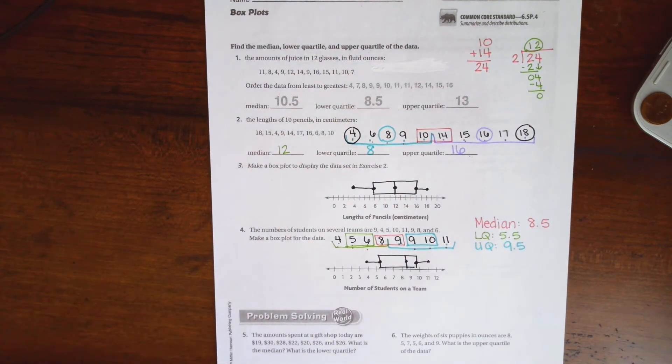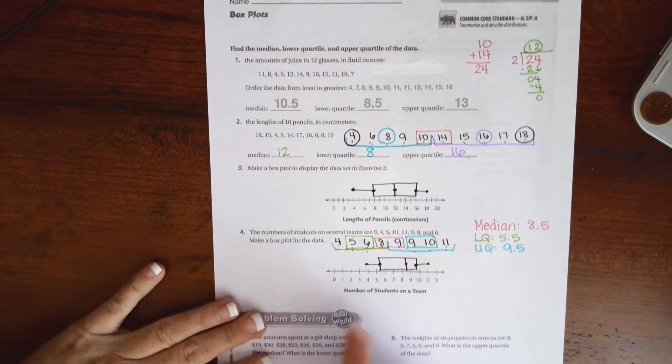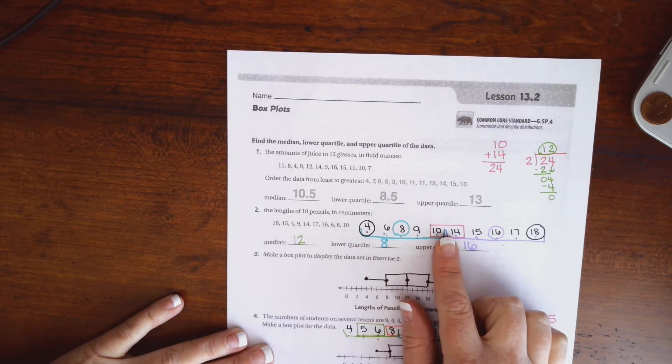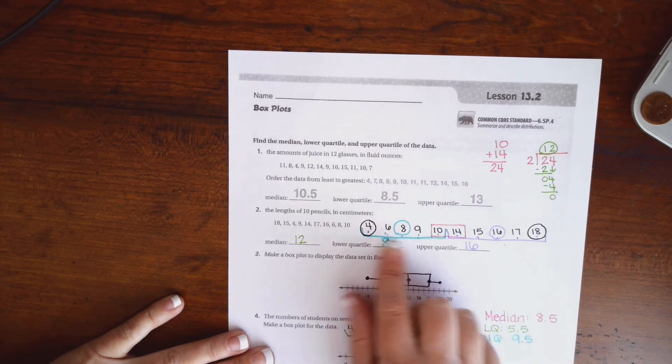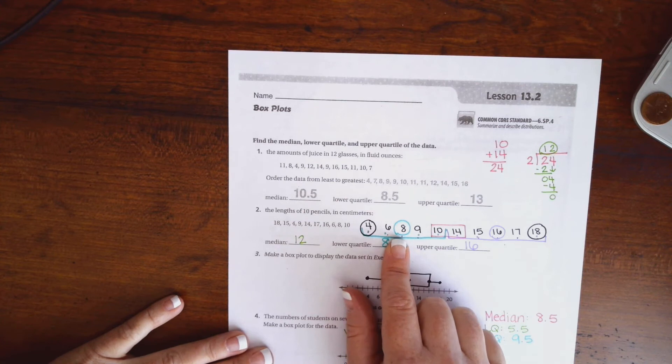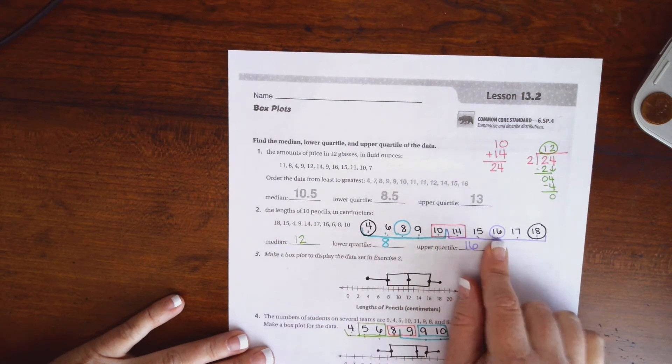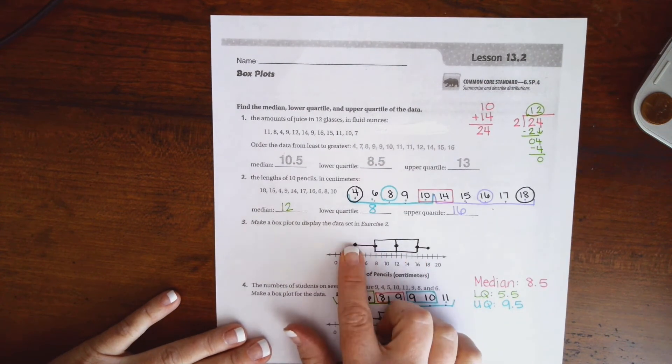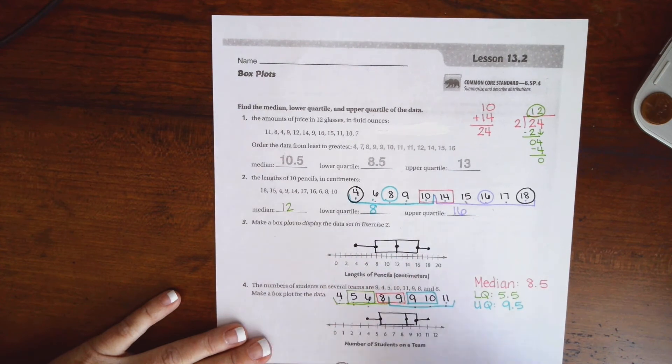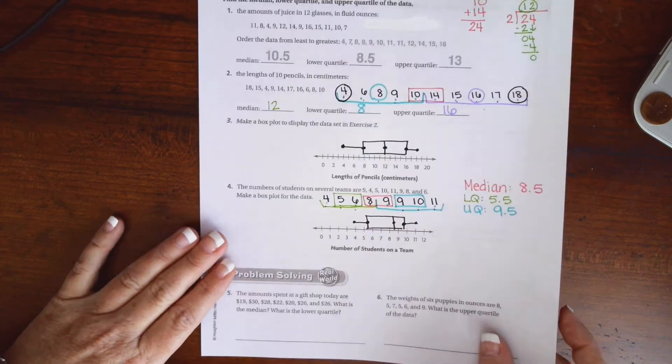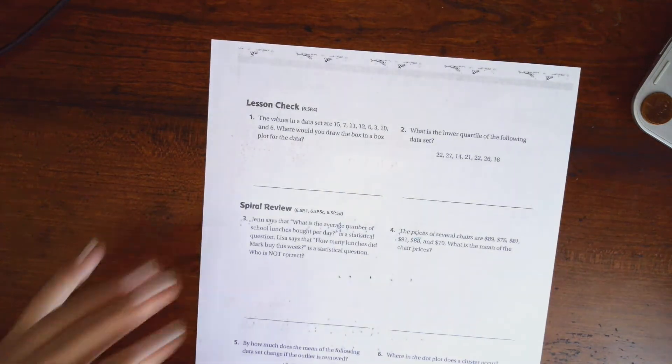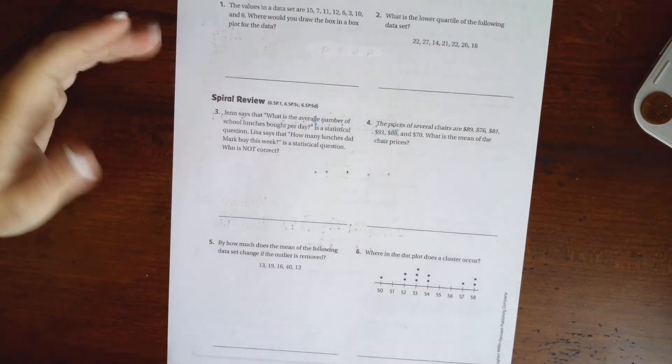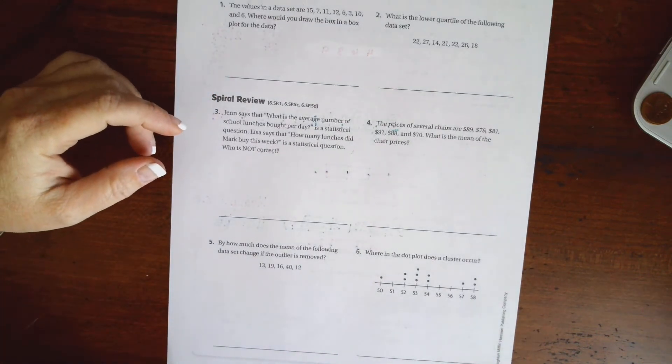I'm going to leave you guys to try and do 4 and 5. Remember, the very first step is to line up your numbers in order from smallest to biggest. Find your median. Then find the median for your lower quartile, then find the median for your upper quartile. That's where your three dots go. Then lowest number, highest number, and those are your whiskers. So try numbers 5 and 6. You guys can totally do this. Then try the lesson check on the back. You guys can totally do that. You're brilliant. We're going to go down and do the spiral review.